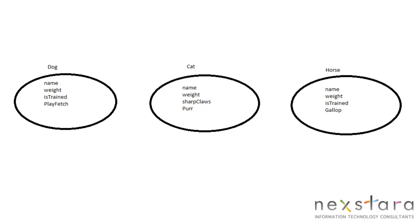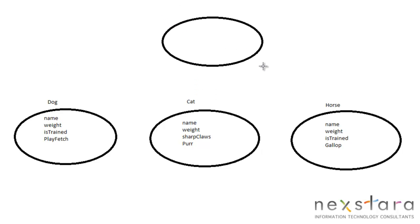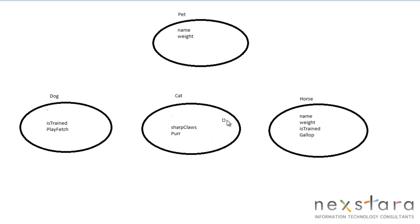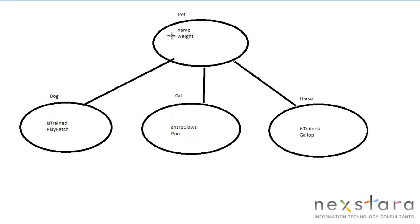So instead of having to reprogram name, weight, and all the methods for everything that's similar across these classes, why don't we factor all that stuff out and instead create a class called Pet? We'll put name and weight in there. Now we'll create a parent class, or base class, and connect them. It's actually like an upside-down tree. We won't have to program name and weight three times — we only have to do it once.